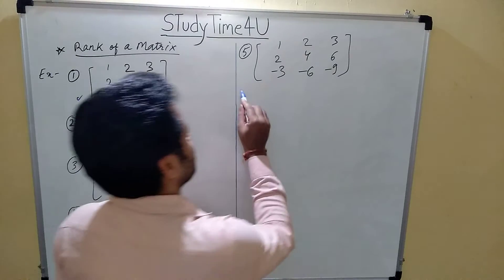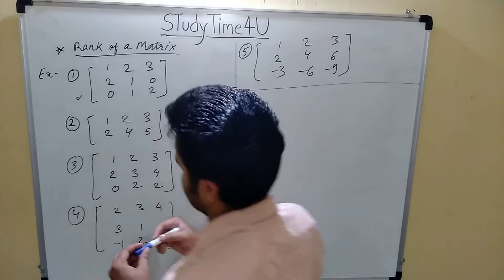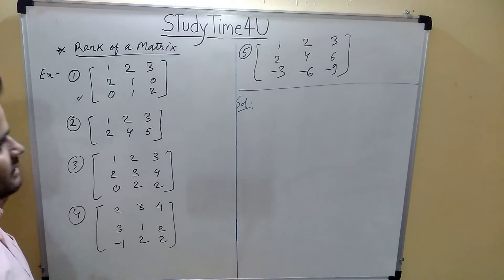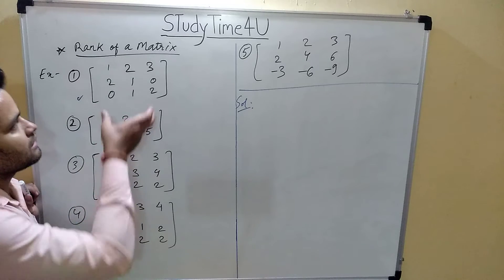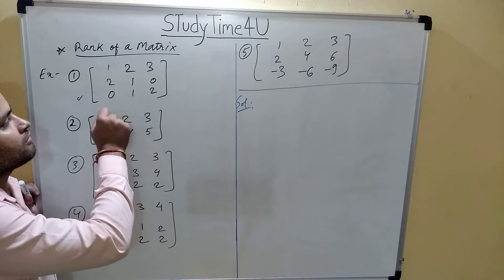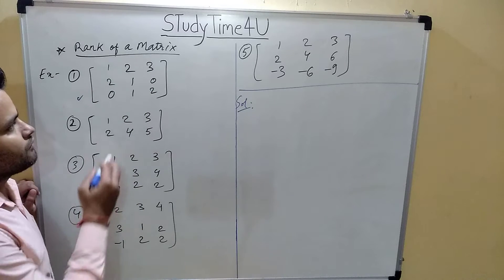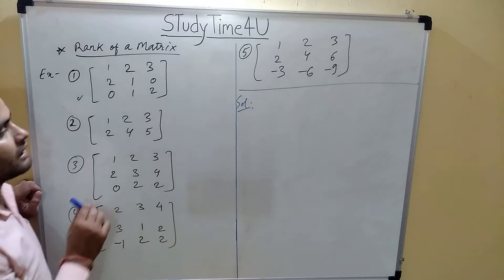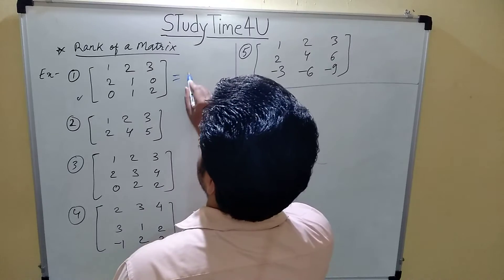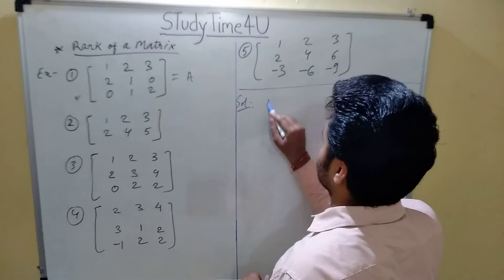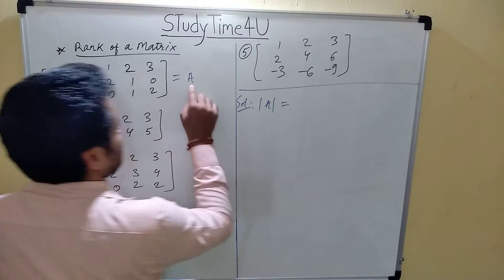First of all I am solving the first example. To find its rank, we have learned in the earlier video that we have to find the minors — the determinant formed by its square rows or columns. If the minor gives 0 then it is not the rank for that order. So first we will assume this is matrix A and find the determinant of A, which is the minor for A.